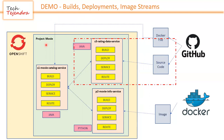This is our demo application which we will create in the OpenShift cluster environment. We have a project called 'movie' with three microservices. S1 and S3 are developed in Java using the Spring framework, and P2 is developed in Python. In the last video we deployed P2 from Docker. In this video we will deploy the S3 microservice.